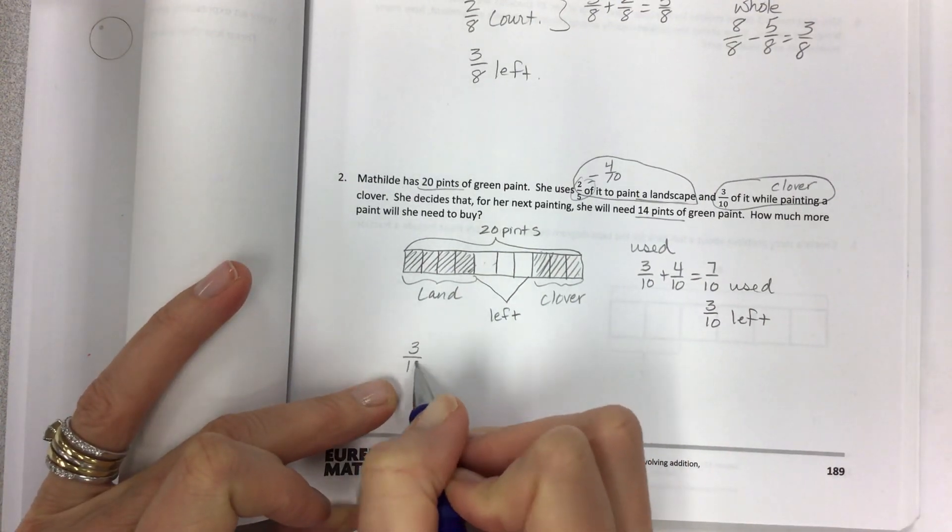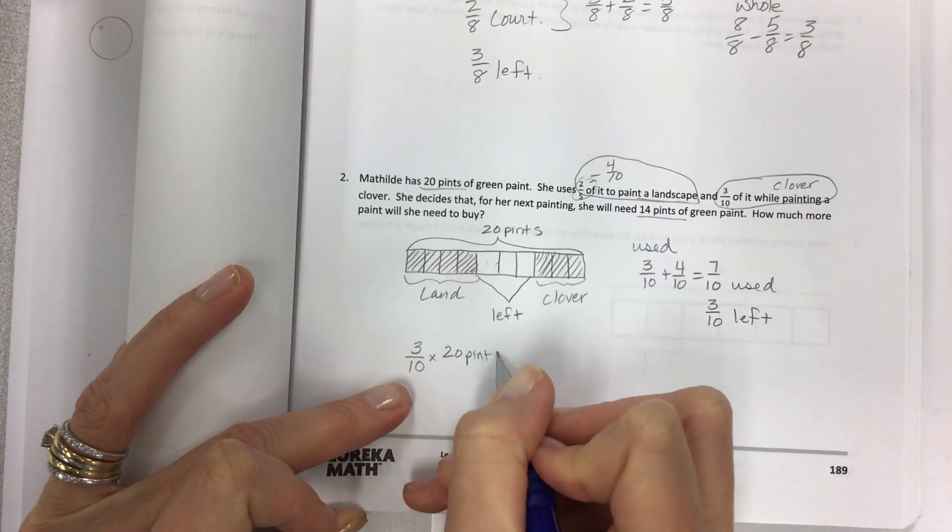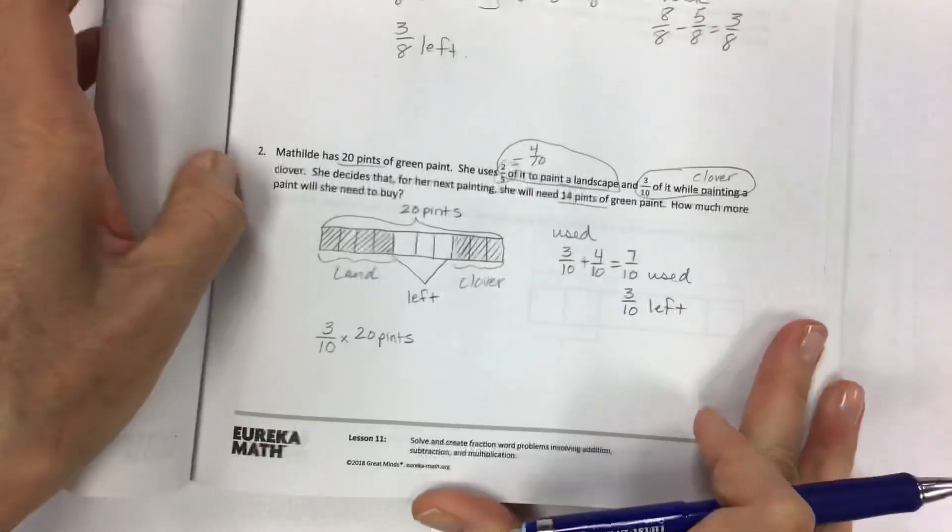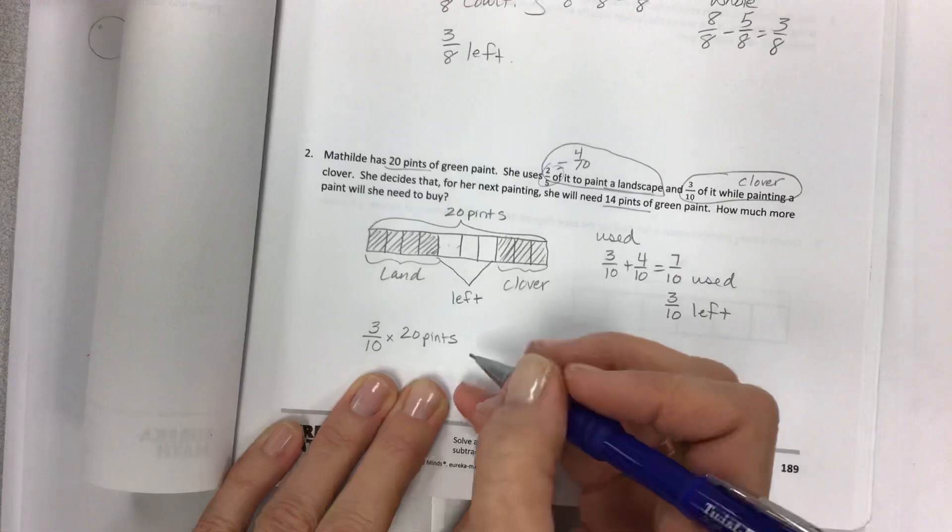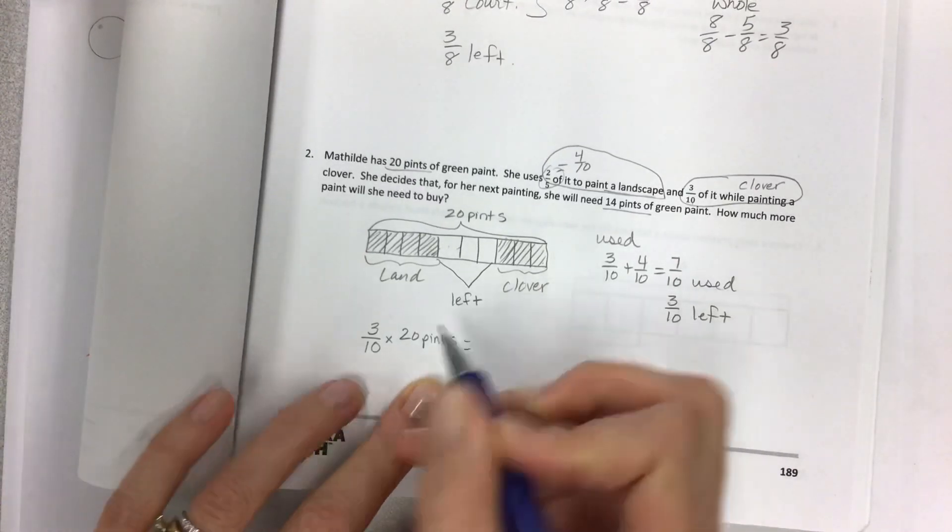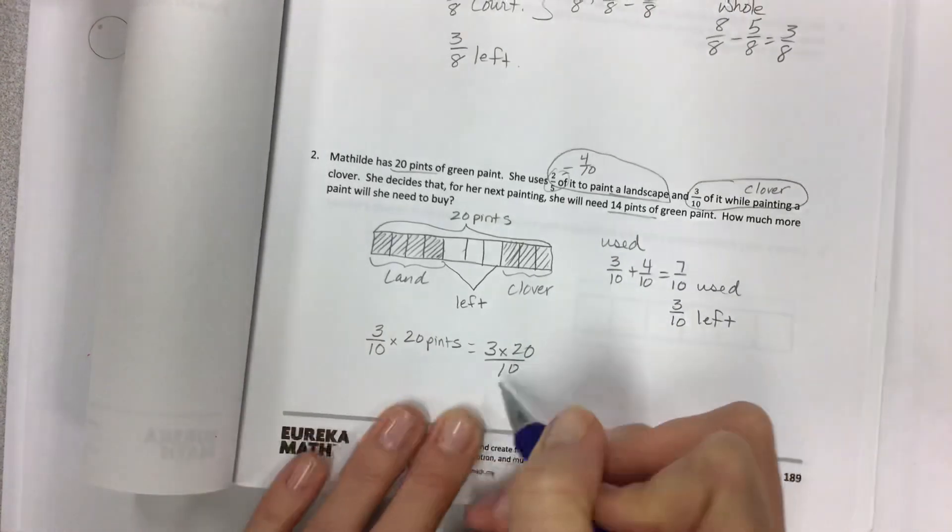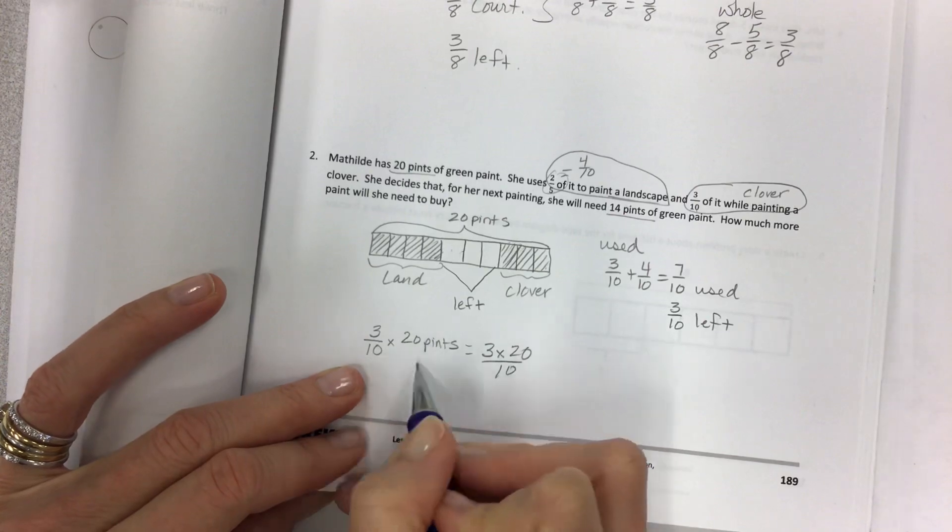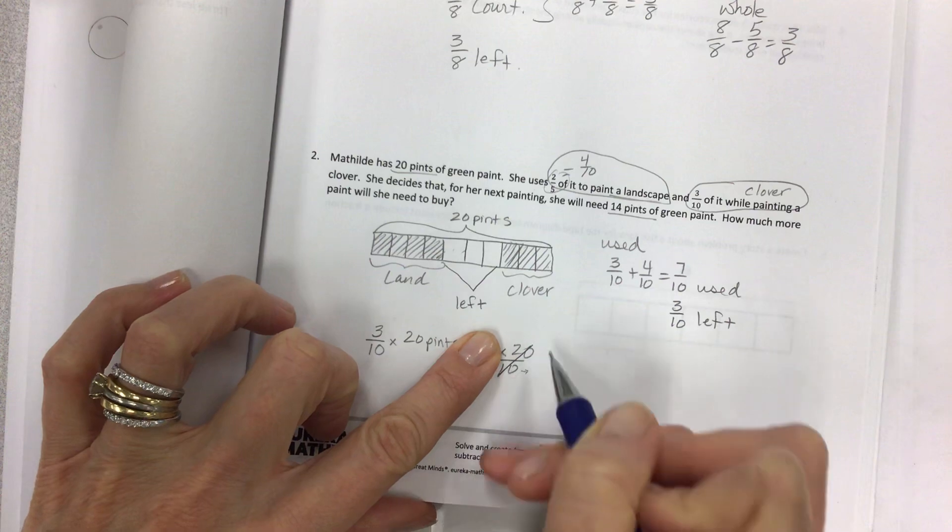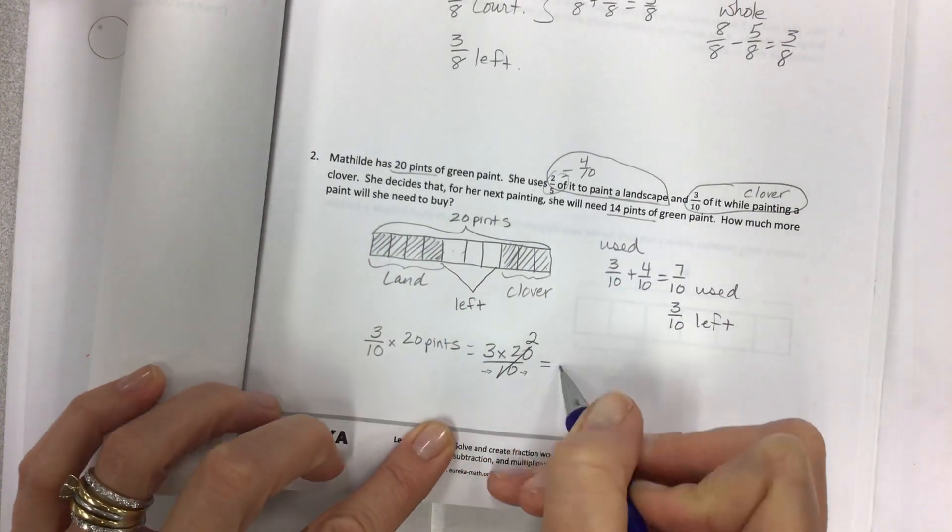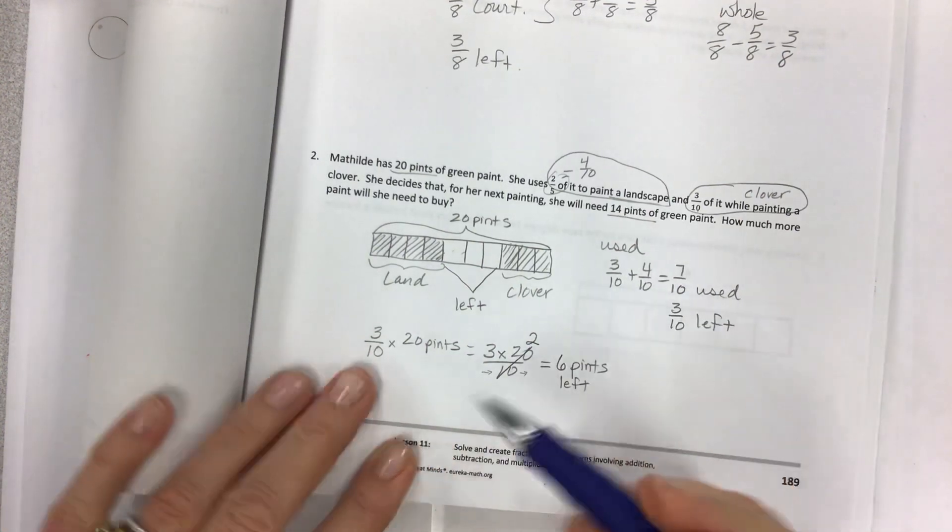And so when I look at this, this is what I'm going to combine because I'm going to need some more paint. So we have to figure out how much this is. I have three tenths of all the stuff that we bought. So if I used up that and I have this left, then I can take three tenths of 20 pints.